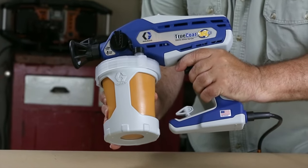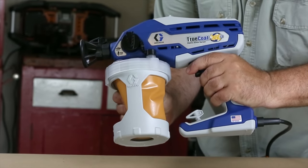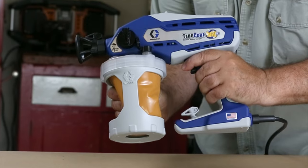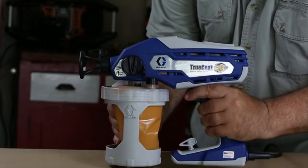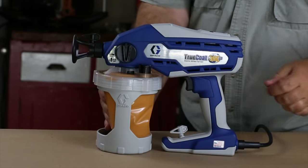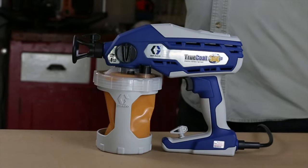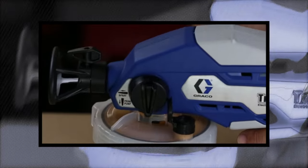Gently squeeze the flex liner bag to push the air through the vacuum valve just until you see material enter the vacuum valve reservoir. Stop squeezing the flex liner bag and snap the vacuum valve cap closed. You will hear the cap click when it's properly closed.